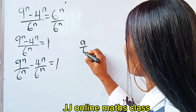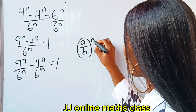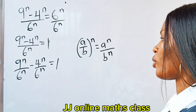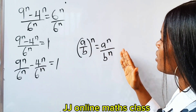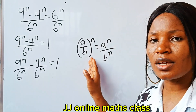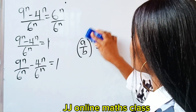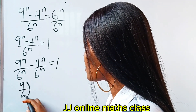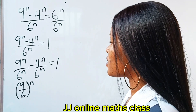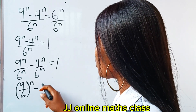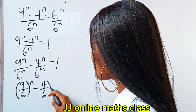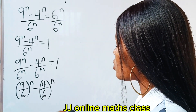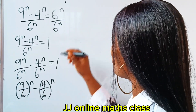Now recall the law of indices that states that (a/b)^n equals a^n / b^n. Our expression is already in this form, so let's apply it. We will have (9/6)^n minus (4/6)^n equals one. Now let's reduce these fractions to their lowest terms.